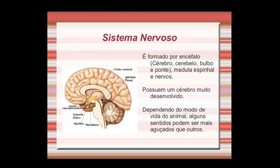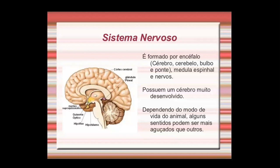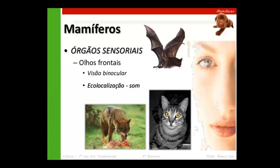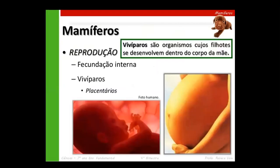O sistema nervoso dos mamíferos é bem desenvolvido. O cérebro tem uma área muito grande, com muitas células nervosas para processar muitos estímulos. Em geral, o cérebro dos mamíferos é mais desenvolvido que o das demais classes estudadas. Os órgãos sensoriais também são desenvolvidos — alguns têm boa visão, outros têm olfato mais desenvolvido. Varia de animal para animal.